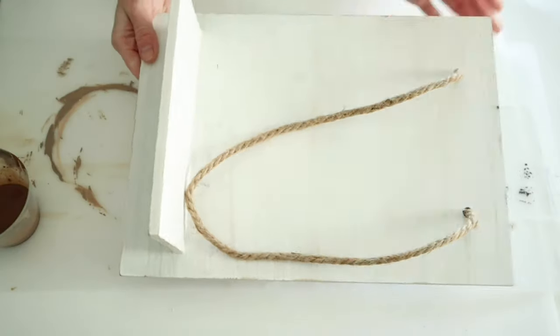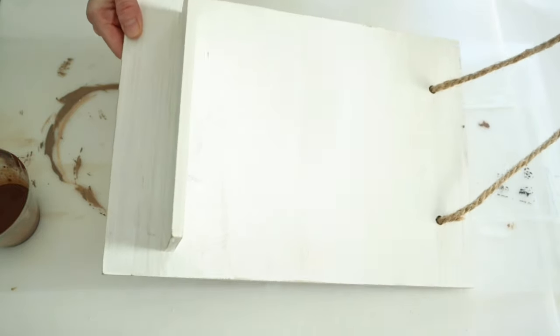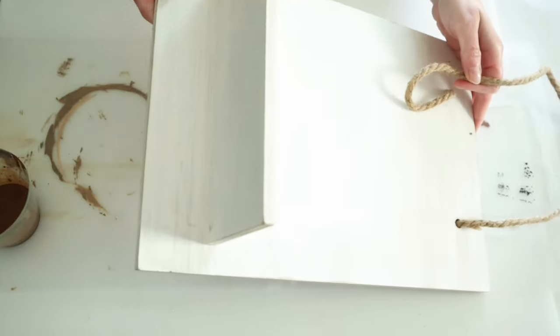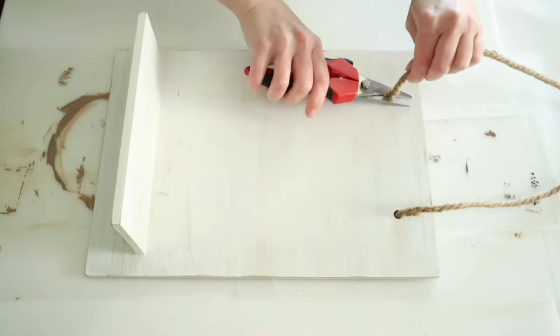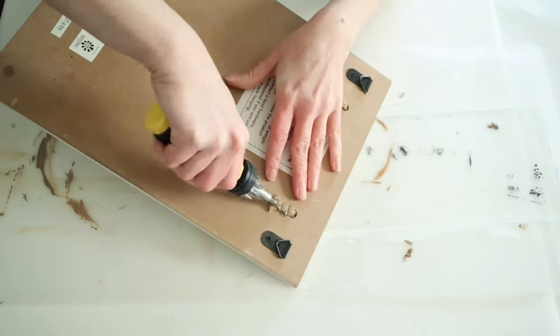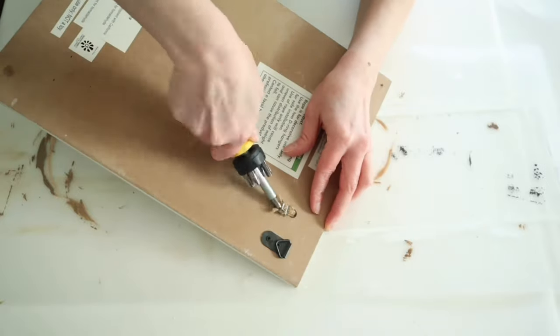For this final thrift store project, I found this wood wall hanging shelf at my local thrift store, and I just thought it would be really cute for this next project. I went ahead and cut off the rope handles. I'm not going to be using those. And I removed the staples from the back as well.